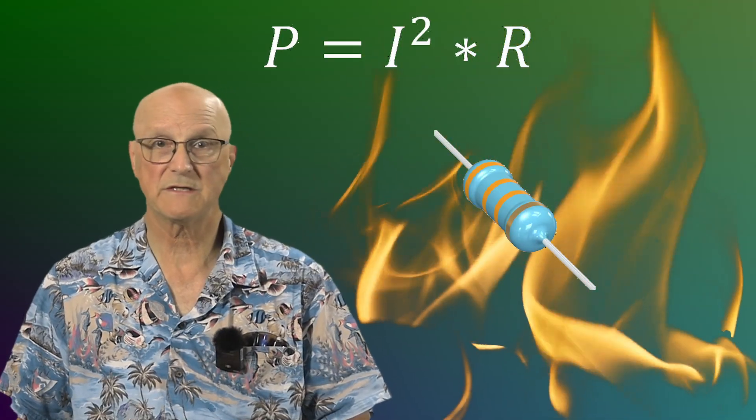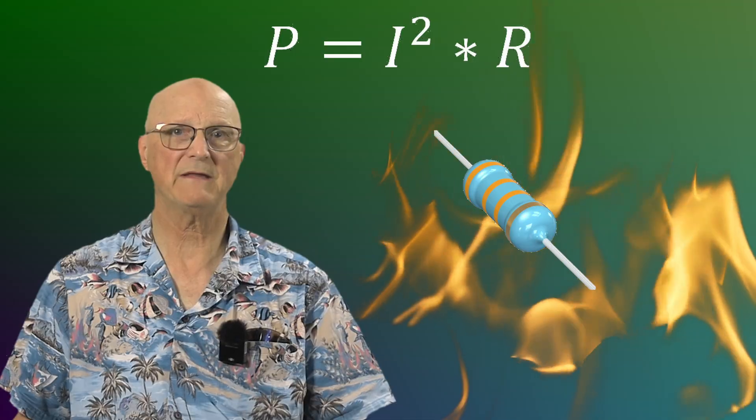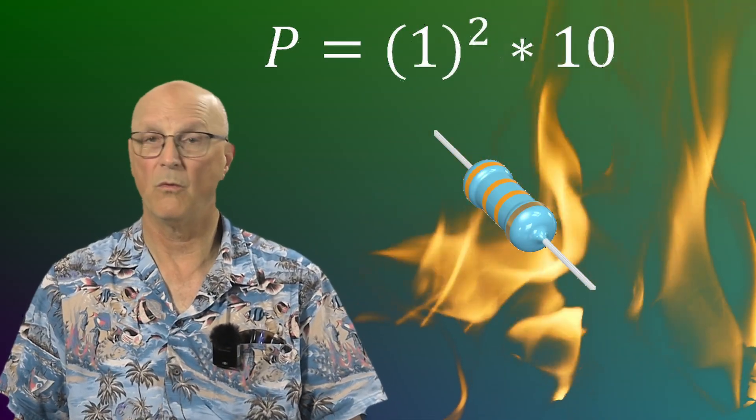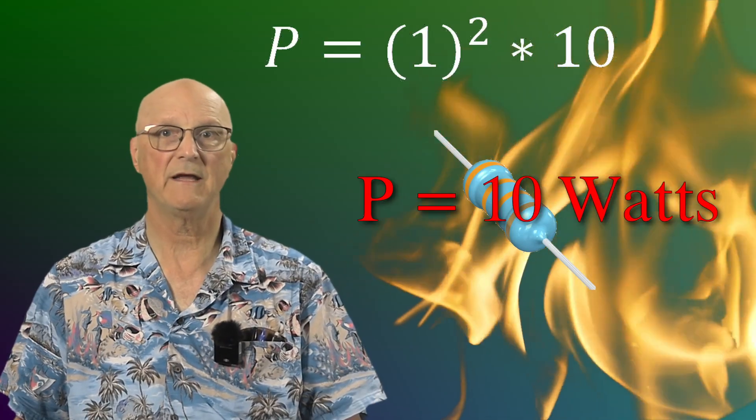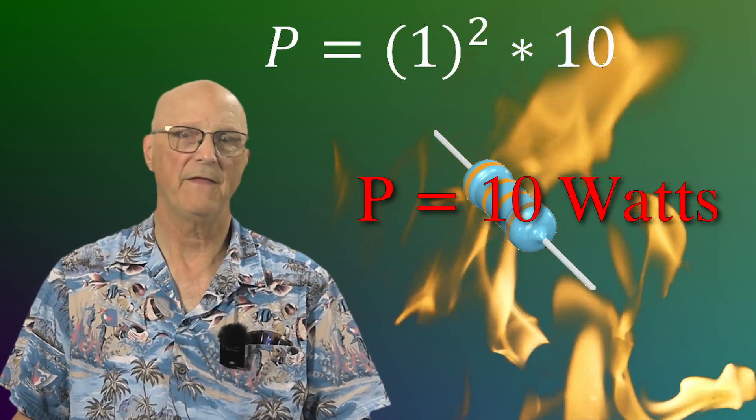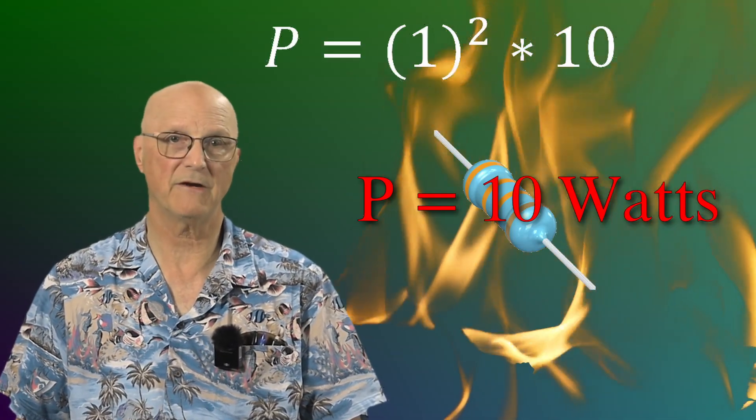So for a 10 ohm resistor with one amp running through it, we can anticipate that it will have to dissipate one squared times 10 or 10 watts of power in the form of heat. The actual temperature rise of this resistor will depend on its environment.